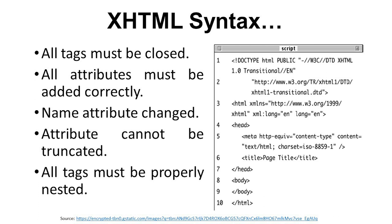The name attribute is changed, attributes cannot be truncated, and all tags must be properly nested. In this example, all tags are closed, all attributes are added correctly, the name attribute is changed, attributes cannot be truncated, and all tags are properly nested.